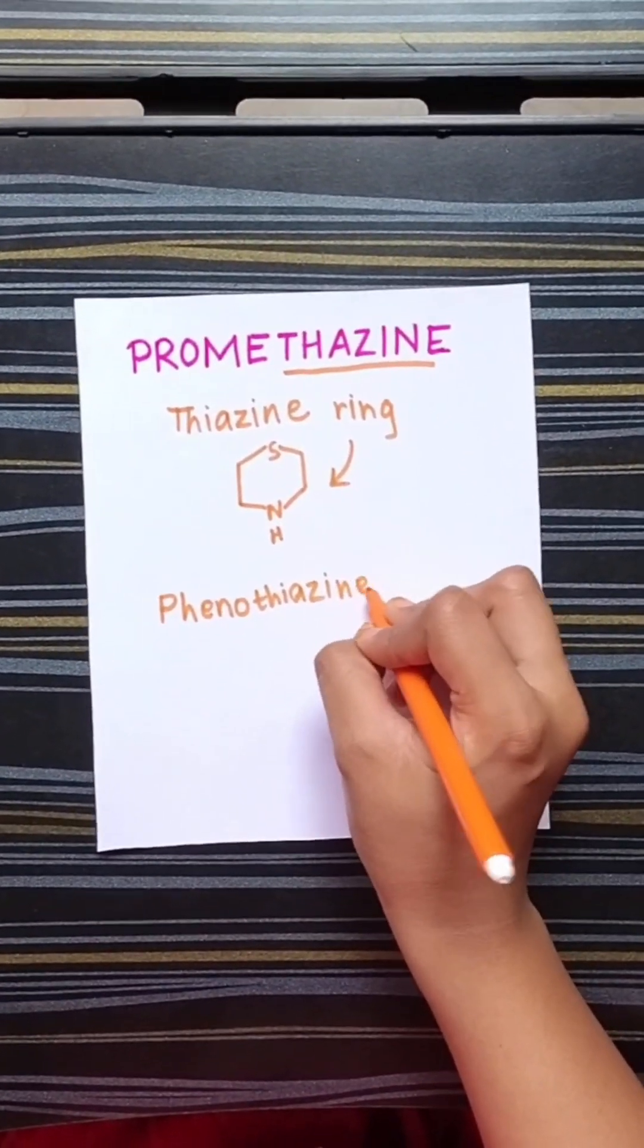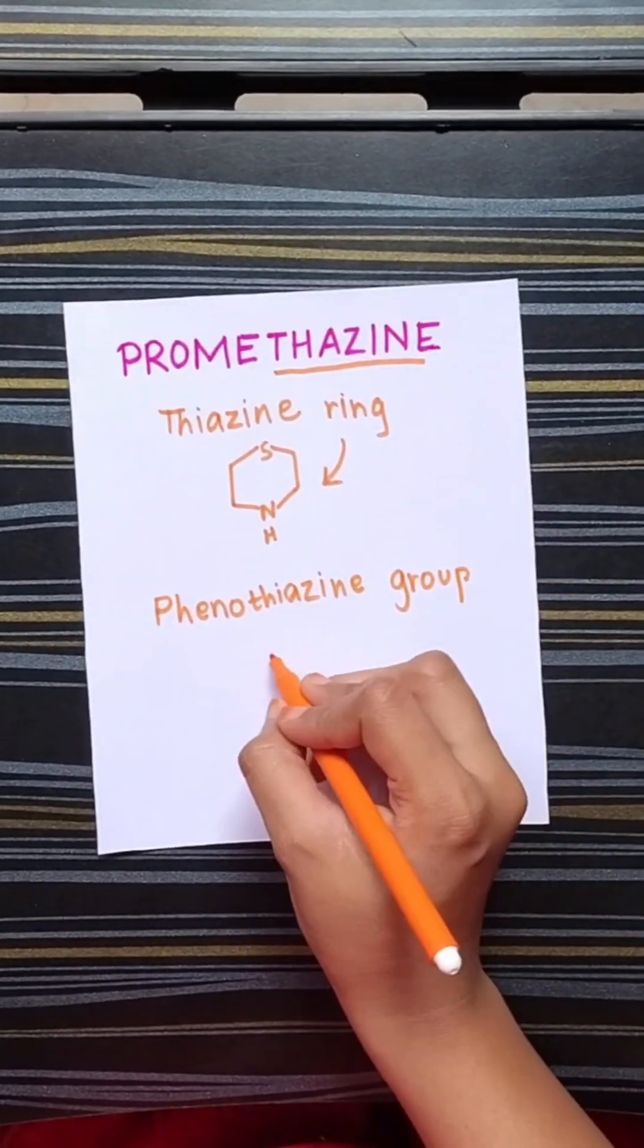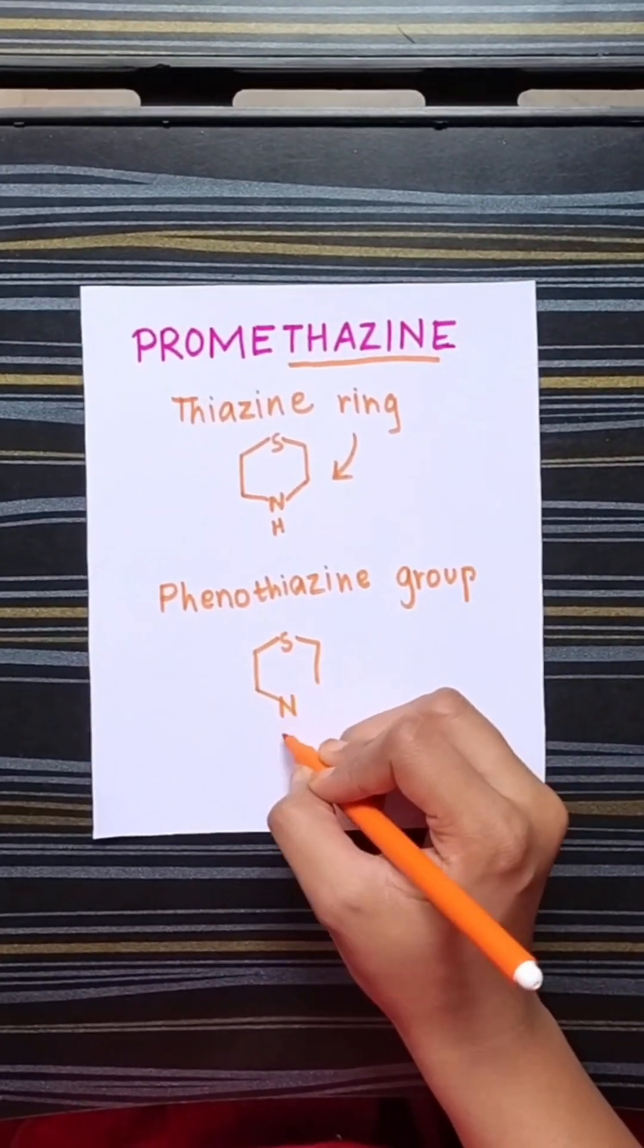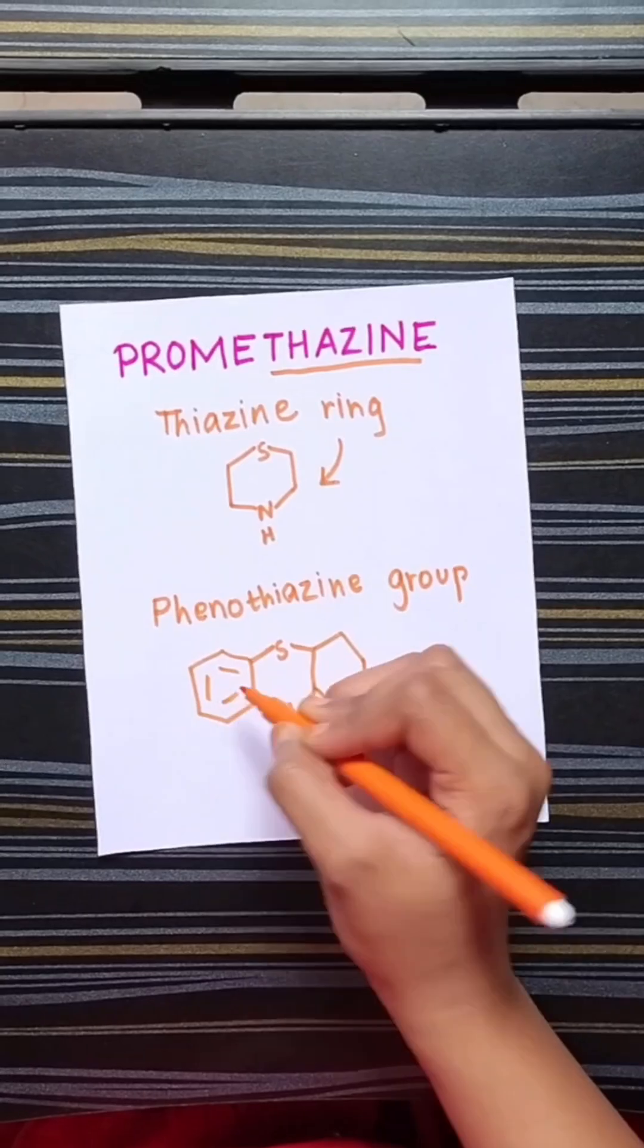Thiazine ring is a six-membered heterocyclic sulfur and nitrogen containing ring to which two phenyl rings are attached at the side.